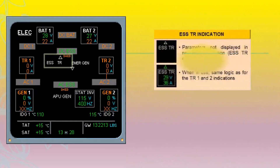Essential TR indication parameters are not displayed in normal configuration because its contactor is open. Parameters show in green when in use, following the same logic as for the TR 1 and 2 indications.